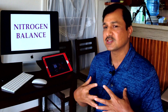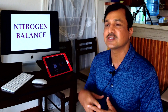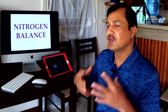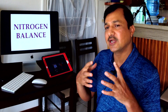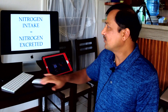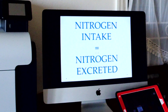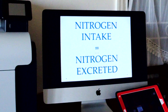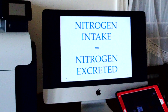Amino acids and proteins are the major nitrogen source for us, and urea is the major nitrogen excretory product. So when we talk about nitrogen balance, the amount of nitrogen coming into our body should be equal to the amount of nitrogen going out. The nitrogen carried by the amino acids coming in should be equal to the urea going out — that is when we are in nitrogen balance.